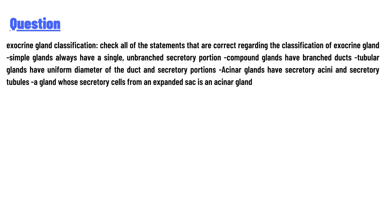Simple glands always have a single unbranched secretory portion. Compound glands have branched ducts. Tubular glands have a uniform diameter of the duct and secretory portion. Acinar glands have secretory acini and secretory tubules. The gland whose secretory cells form an expanded sac is an acinar gland.